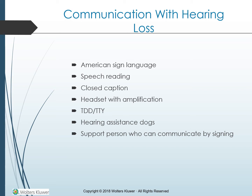Other hearing aid equipment includes telephone amplifying services, text-based telecommunication devices for the deaf, amplified answering machines, text message telephones, teletypewriters, amplified telephones with different frequency responses, and specialized doorbells. Many other products allow the hearing impaired to perceive rather than hear sound. For example, light-activated alarms and smoke detectors, alarm clocks, doorbells, and telephones flash when sound is produced. Hearing dogs, similar to guide dogs for the blind, are specially trained to warn their owners when certain sounds occur.